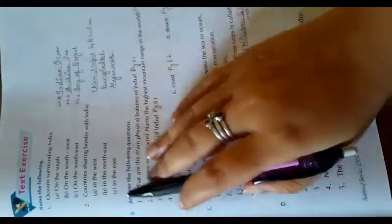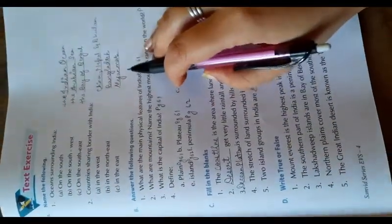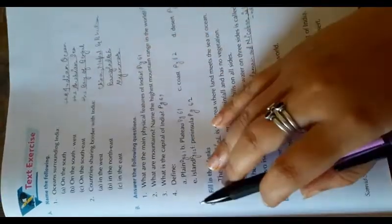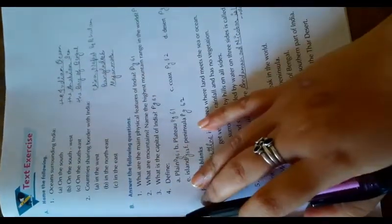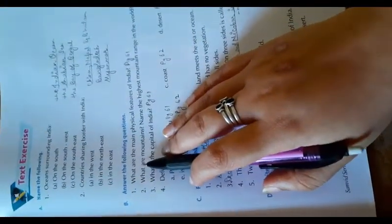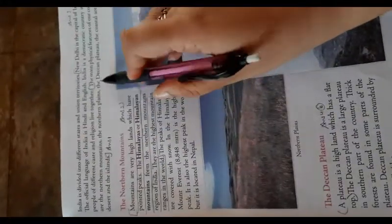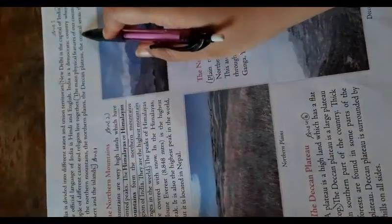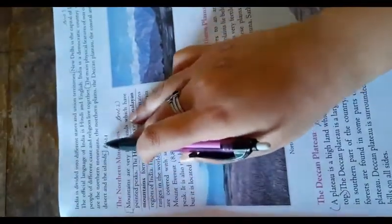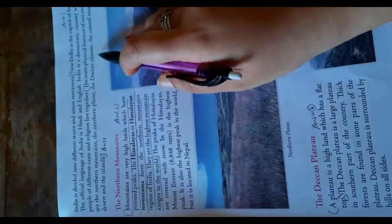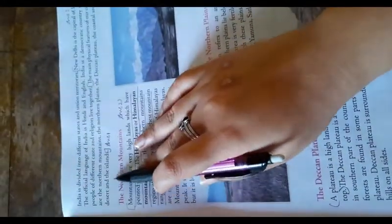Now the question answers: first is what are the main physical features of India, is on page number 61. Now just take out the page number 61. The answer is over here: the main physical features of our country are the northern mountains and the northern plains, the Deccan Plateau, the coastal areas, the desert, and the island.